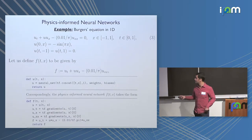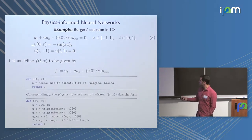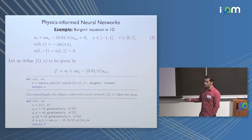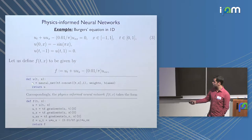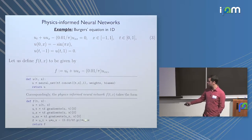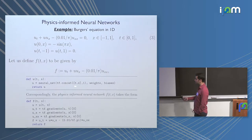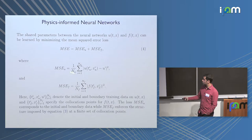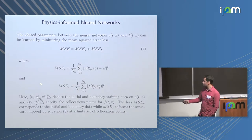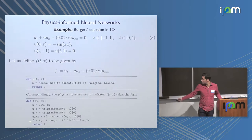Let's take Burgers' equation in one dimension with a small viscosity term, subject to initial and boundary conditions. We can solve this equation in maybe 30 to 50 lines of Python code. All we need to do is define the forward pass of a neural network that takes space and time coordinates as input, predicts the solution u, then use automatic differentiation in TensorFlow to construct the residual of the equation. We train the network with a composite loss function: one term fits the observed initial and boundary conditions, another minimizes the PDE residual.